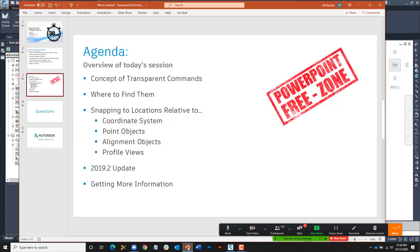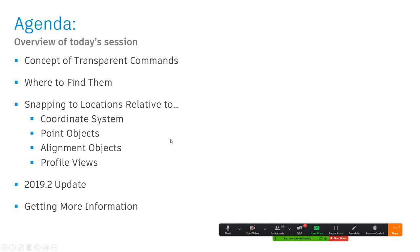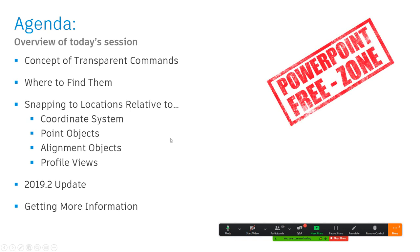Today we talked about the concept of transparent commands, which have been in AutoCAD forever. Civil 3D includes a ton of transparent tools that act a lot like object snaps, allowing us to snap to points applicable to Civil engineering work. They can be found on the right side of the screen in older versions, or in the right-click menu and transparent ribbon tab in newer versions. We walked through examples snapping to locations relative to the coordinate system, point objects, alignment objects, and profile views, and covered updates available in 2019.2. These are very powerful, easy to use, and well-documented tools.